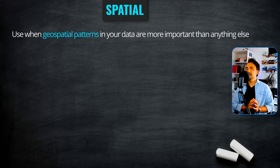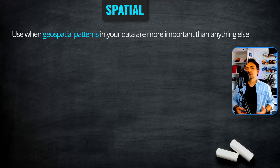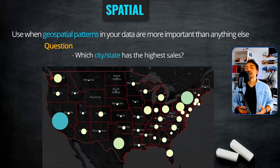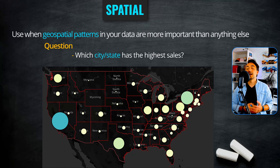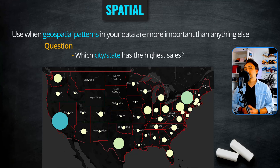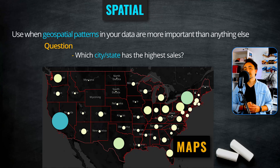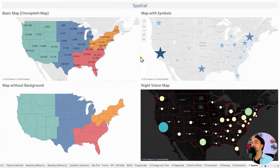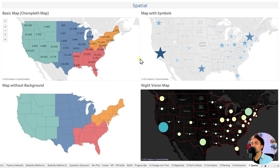Next is the spatial category. Use it when the geospatial pattern of your data is the most important thing to show. If you have questions involving location information — countries, cities, states — such as which city has the highest sales, use the spatial category. In this course, we built four different maps: the filled map, or choropleth map, where states are filled with colors; a symbol map using symbols like stars to show sales per state; and customized maps, like a night vision map.